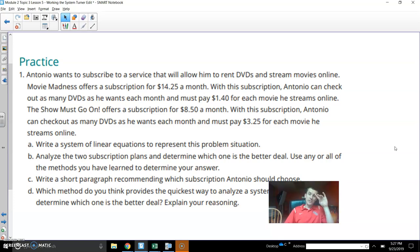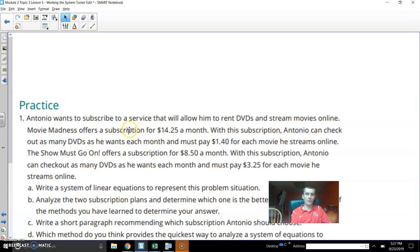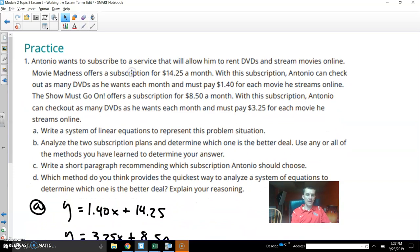Antonio wants to subscribe to a service that allows him to rent DVDs and stream movies online. Movie Madness, the first option, offers a subscription that's $14.25 per month and with that subscription he can rent DVDs for $1.40 each time. So it sounds like he has to pay a little bit and pay for the rental and so the first thing I wanted to build was the $1.40 per movie plus starting at $14.25.